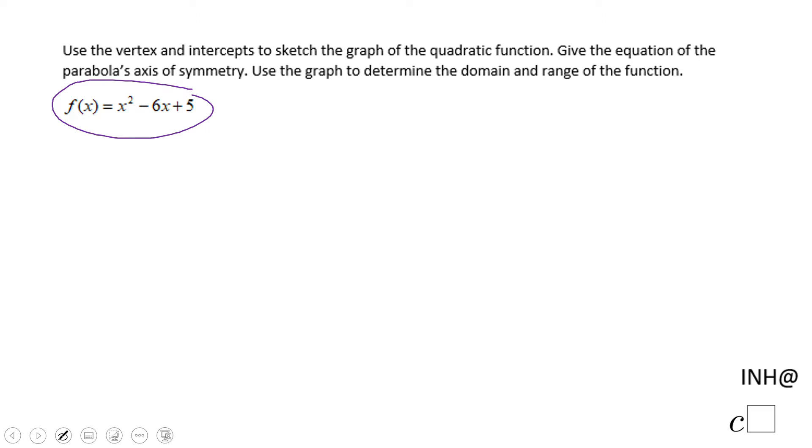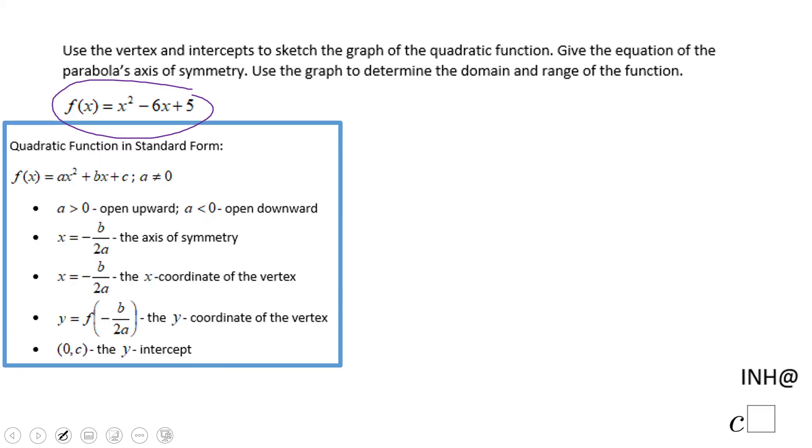So first of all, how do we find the vertex? Look here, we need to do x equals negative b over 2a. And that means in this case negative negative 6, be careful because this is the b over 2a, 2 times the invisible 1 in front of x squared. So we have negative and negative that becomes positive, 6 over 2 which is 3.